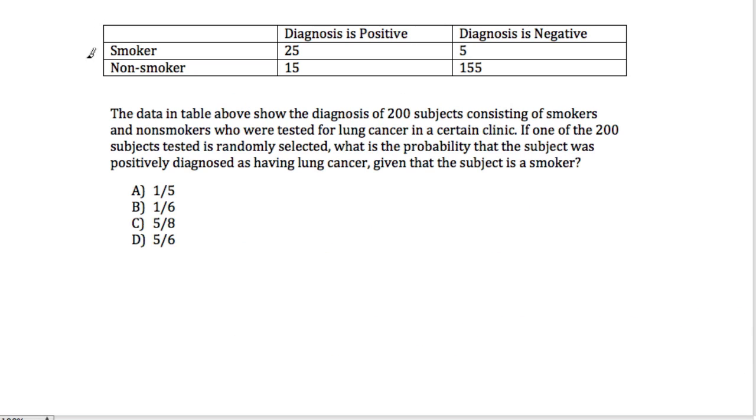And this problem, this is a problem about smokers, non-smokers, and if they're having cancer or not. And it says here that the data in the table above, in the table, it shows that the diagnosis of 200 subjects consisting of smokers and non-smokers who are tested for lung cancer in a certain clinic. It says if one of the 200 subjects tested is randomly selected, what is the probability that the subject was positively diagnosed as having lung cancer, they're given, that's the key word, that the subject is a smoker.